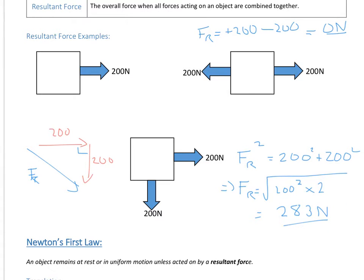Those are typically the scenarios you come across. You might encounter things where you've got forces at an angle — so they're not perpendicular. How you deal with that is you resolve the angled force into its horizontal and vertical components, add them together if necessary, and then you still use this Pythagoras method. These are the three scenarios you essentially will need to be able to deal with.